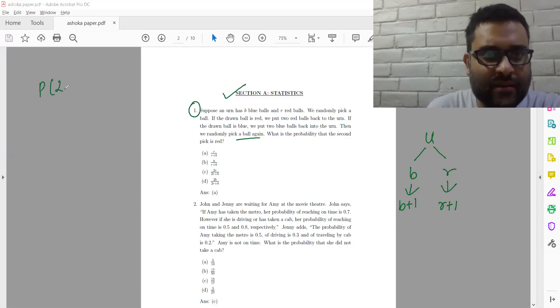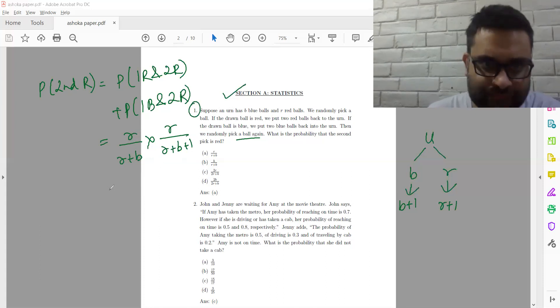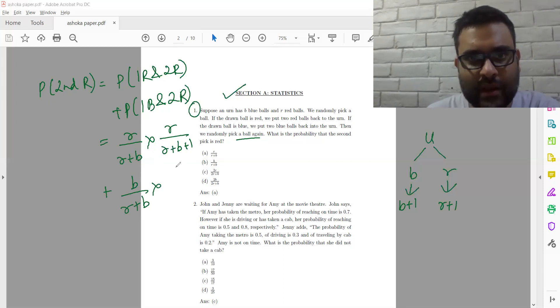So probability that the second ball is red. That is basically probability that first red and second red, or probability first is blue and the second is red. So first red will be R by R plus B. And then the second ball is also red is R plus 1 by R plus B plus 1. Because the red ball picked plus one extra. Or first I pick a blue ball, and then I pick again.